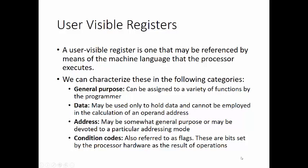We can characterize these into the following categories. One, general purpose, which can be assigned to a variety of functions by the programmer. Two, data registers, which may be used to hold data and cannot be employed in the calculation of an operand address. Address registers can be somewhat general purpose, or they can be devoted to a particular addressing mode. And condition codes, also referred to as flags, are bits set by the processor hardware as a result of operations.